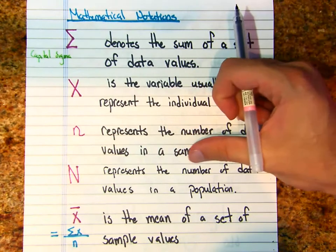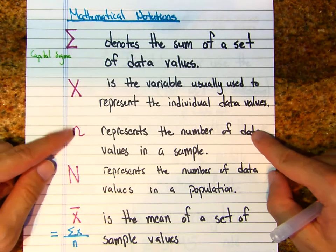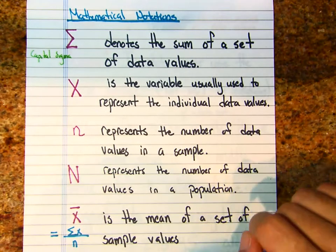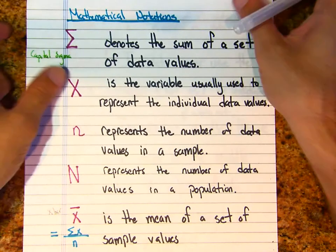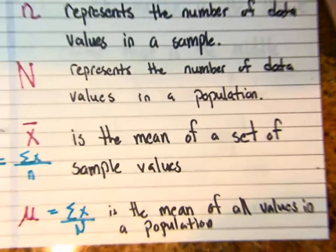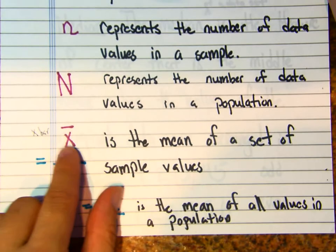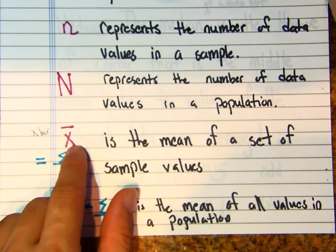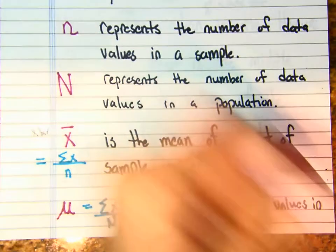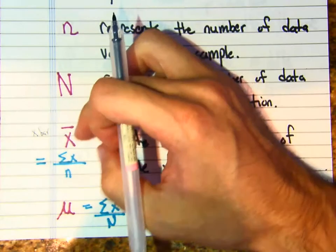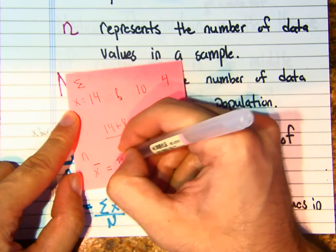Capital N represents the number of data values in a population. So we use little n when talking about a sample and capital N when talking about a population. The symbol x-bar — an x with a bar over it — denotes the mean of a set of data values. So x-bar equals the mean. For our four data values, x-bar is equal to 9.